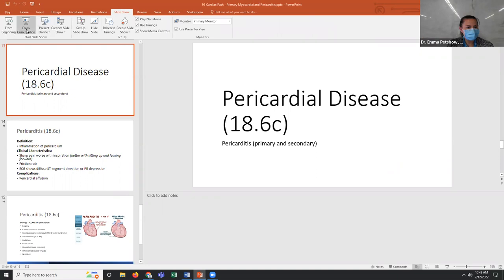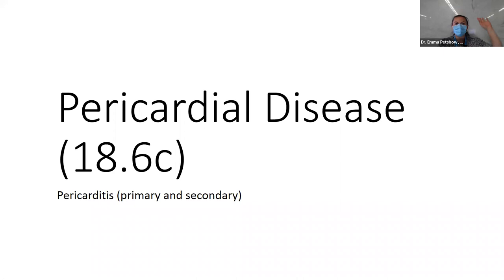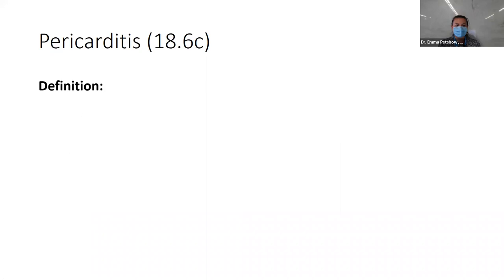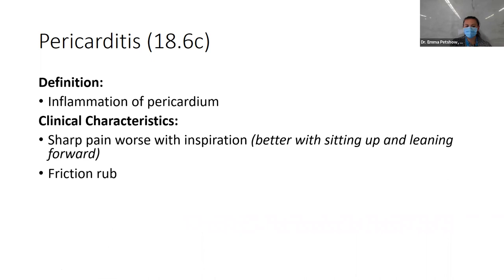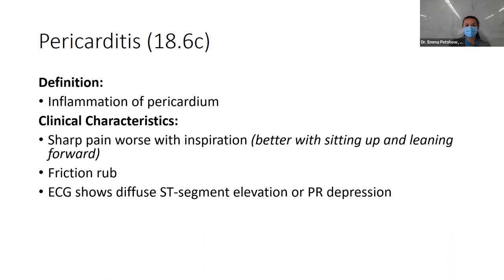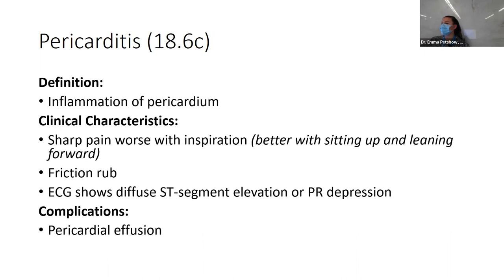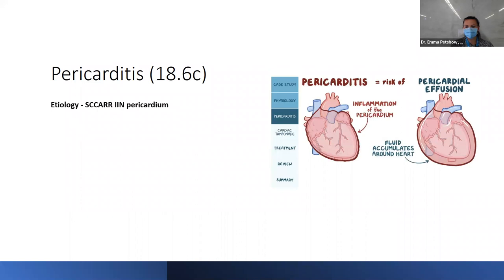Pericardial disease — we've gone through endocarditis and myocarditis, so I want to finish the trifecta with pericarditis. Pericarditis is inflammation of the pericardium. The keynotes are sharp pain that's worse with inspiration, better with sitting up and leaning forward, and a friction rub — those are your cardinal signs and symptoms you could see on a test question. Complications could lead to pericardial effusion, which is fluid within that pericardial space.